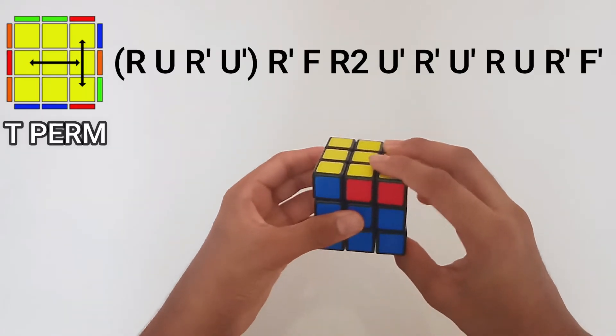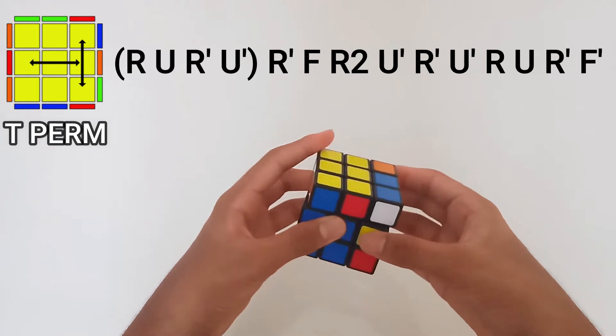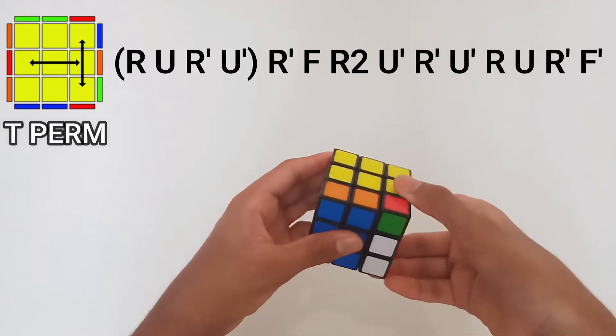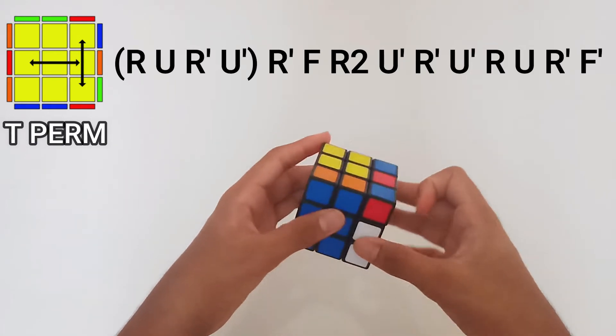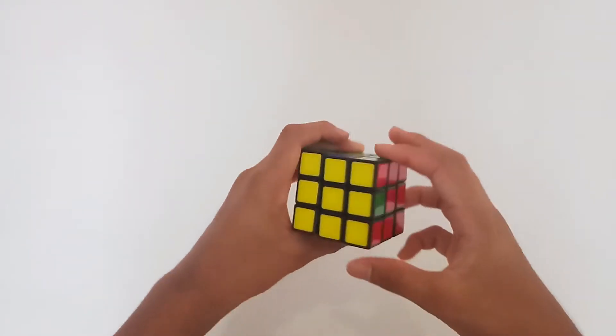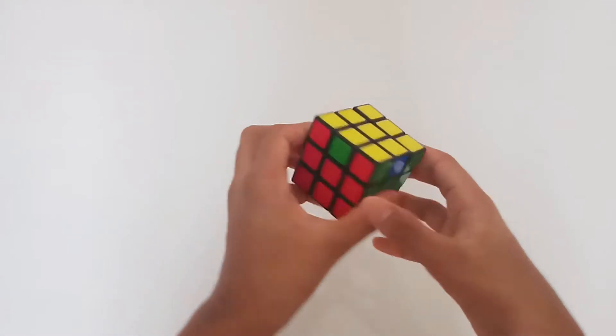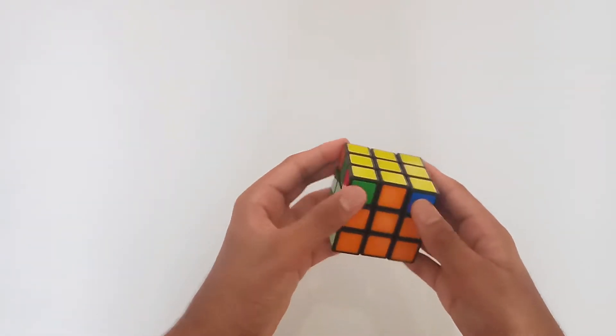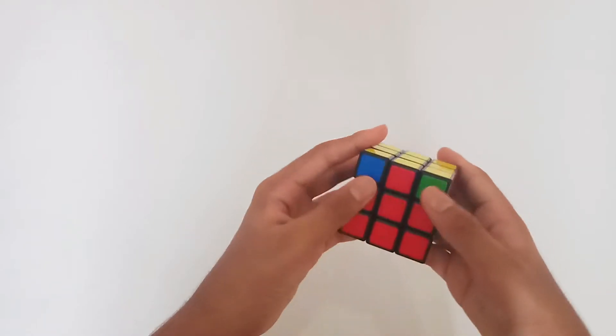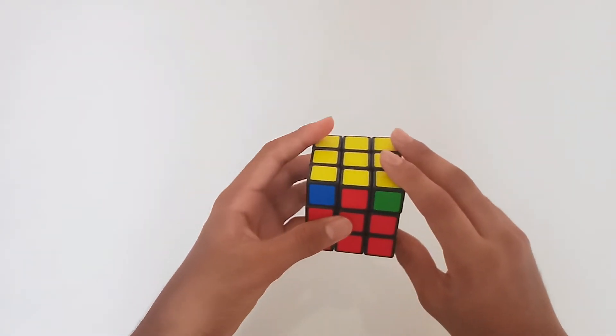But when we have a case like this where no two adjacent corners have the same color, we do this algorithm first and all the corners are solved.